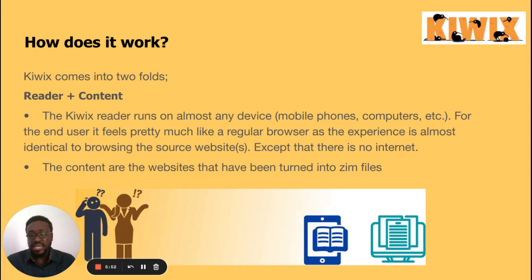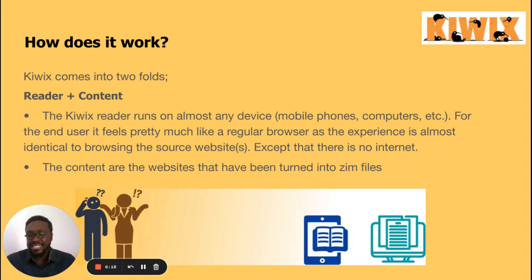How then does it work? KIWIX comes in two parts: there is a reader and there is content. The KIWIX reader runs on almost any device — phones, computers. For the end user, it feels pretty much like a regular browser, as the experience is almost identical to browsing the source website, except that this time there is no internet. The content are the websites that have been turned into ZIM files, and the reader can only access content that has been converted to ZIM files.